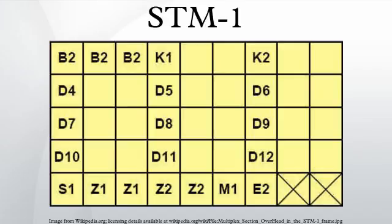The STM-1 is the SDH fiber-optic network transmission standard. It has a bit rate of 155.52 Mbit/s. Higher levels go up by a factor of 4 at a time.